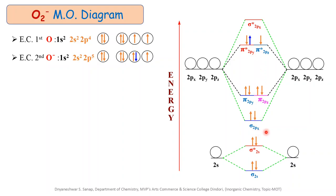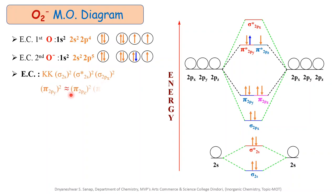The electronic configuration for O2 minus is: KK (sigma 2s)2 (sigma star 2s)2 (sigma 2px)2 (pi 2py)2 = (pi 2pz)2 (pi star 2py)2 = (pi star 2pz)1. The only difference between O2 and O2 minus molecular orbital diagrams is the extra electron in O2 minus, which is responsible for changes in properties such as energy, bond order, and magnetic property.